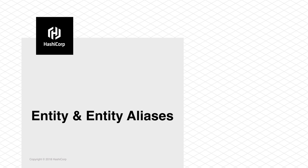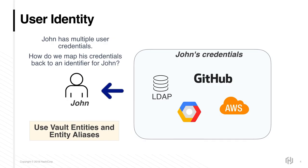In this section, we'll review entity and entity aliases and what problems they solve. The identity secrets engine is the identity management solution within Vault. It internally maintains the clients who are recognized by Vault. Each client is internally termed as an entity, and an entity can have multiple aliases. For example, a single user who has two accounts in both GitHub and LDAP can be mapped to a single entity in Vault that has two aliases, one of type GitHub and one of type LDAP.